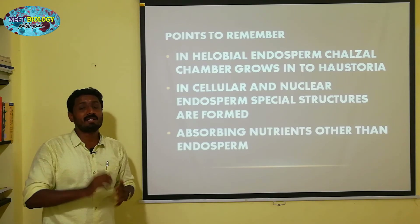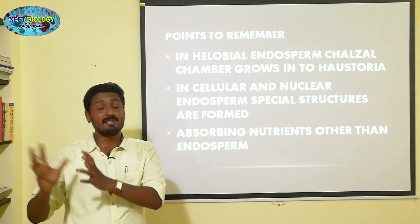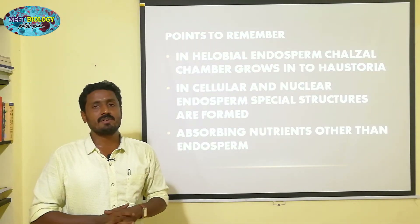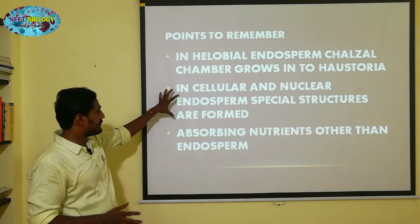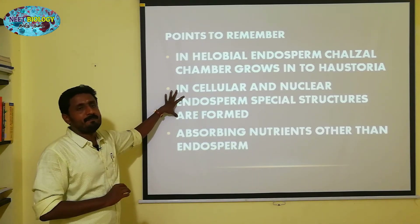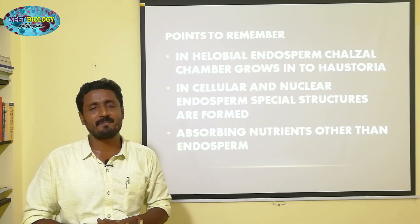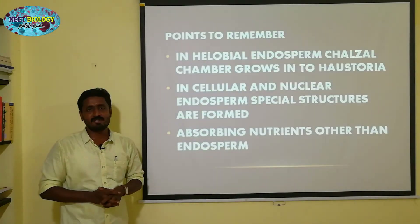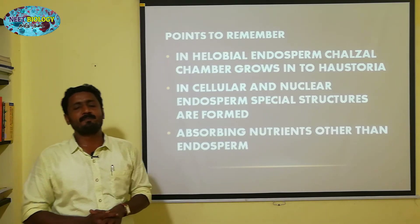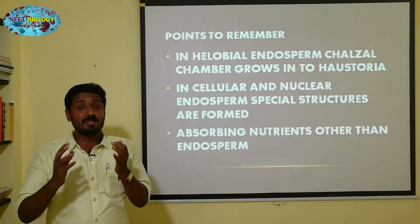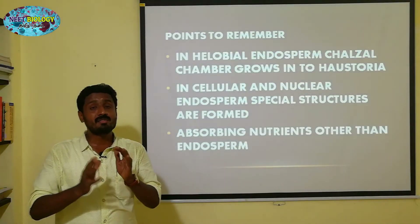If we are in the helobial endosperm, the helobial endosperm has a big chamber. I'm going to talk about coconut milk as an example. You can see the link in the description. In cellular and nuclear endosperm, it's not a specialized tissue. Before the endosperm, the ovules are living in the whole path. The nutrients are being made.